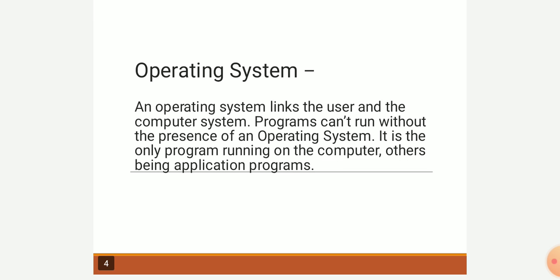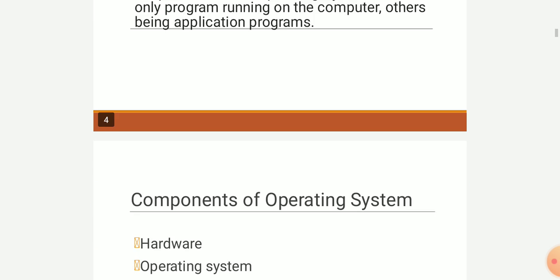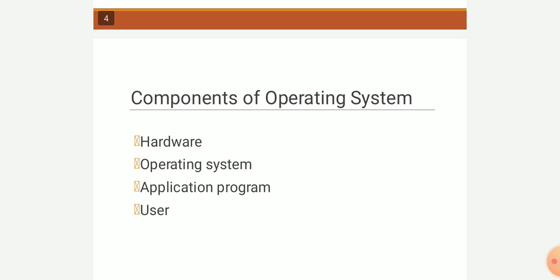Now, talking about the components of an operating system — there are four components: hardware, operating system, application programs, and user. These are the components, and all the work happens using these four things.